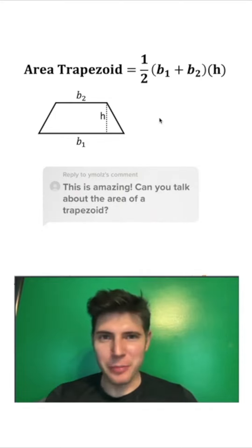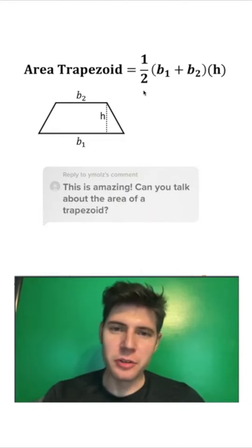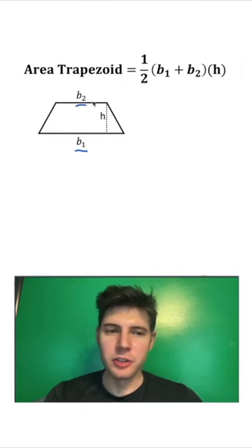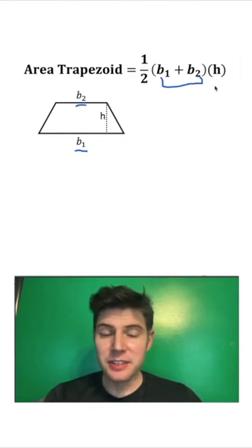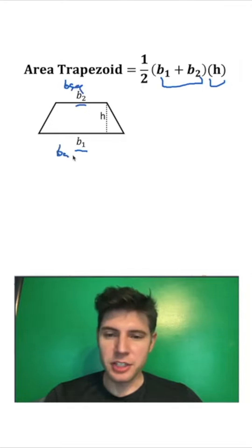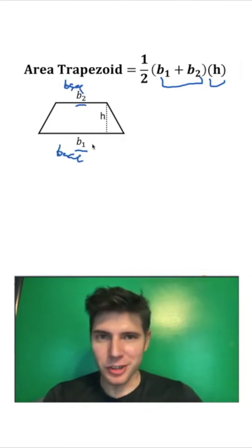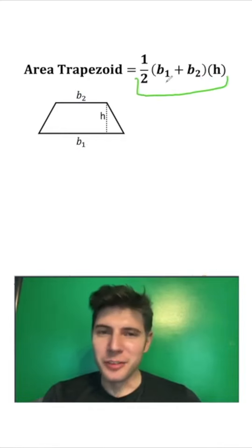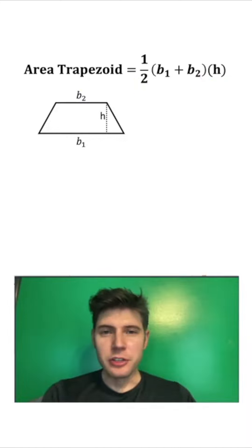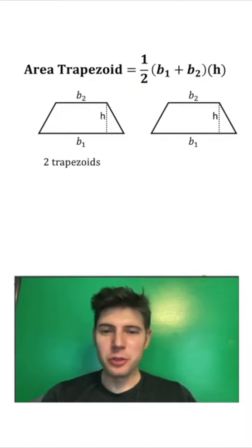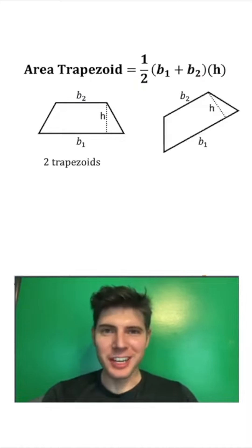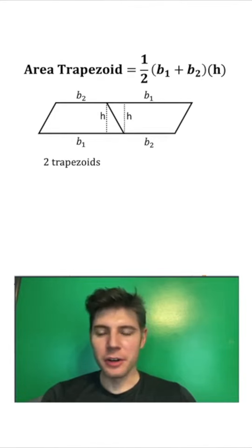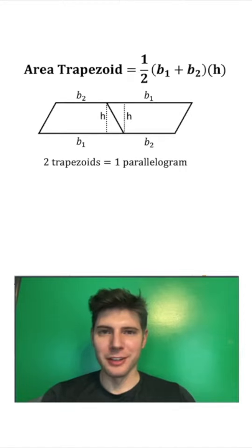Can you talk about the area of a trapezoid? The formula for the area of a trapezoid is one half times (b1 plus b2) times h — the sum of the bases times the height. Both the top and bottom are called bases: base one and base two. How is this derived? There are many ways; here's one I like. If we duplicate this trapezoid, we now have two trapezoids. Then if I flip the second one upside down and scoot it over, our two trapezoids equal one parallelogram.